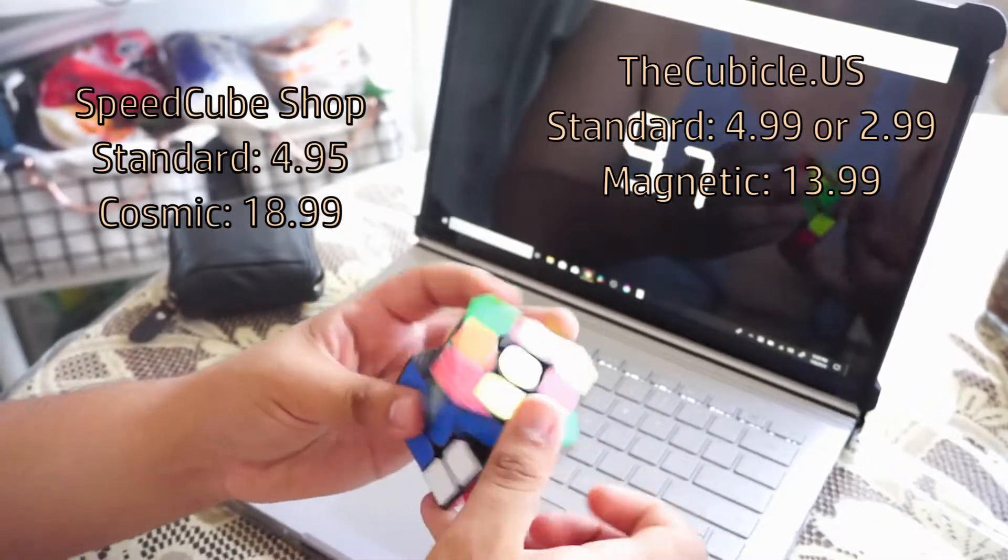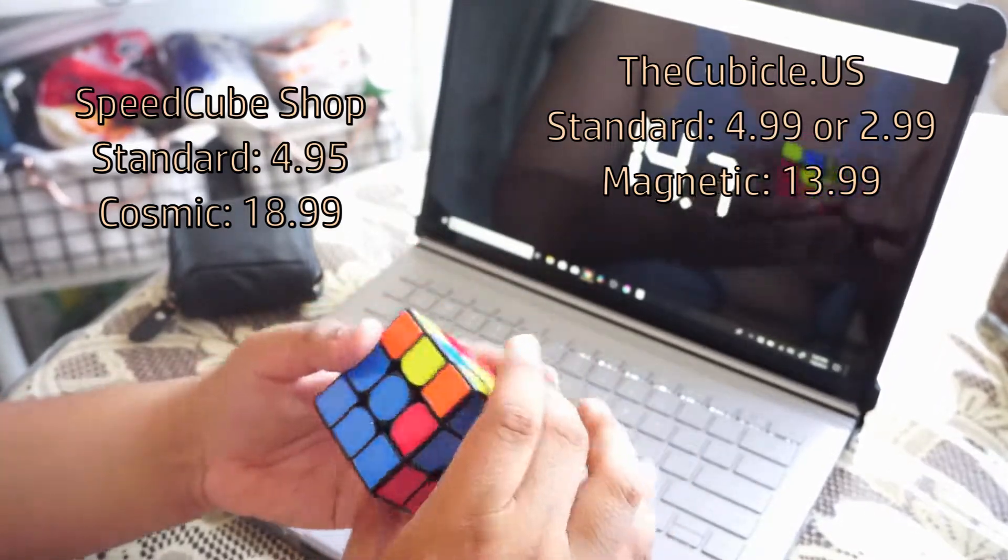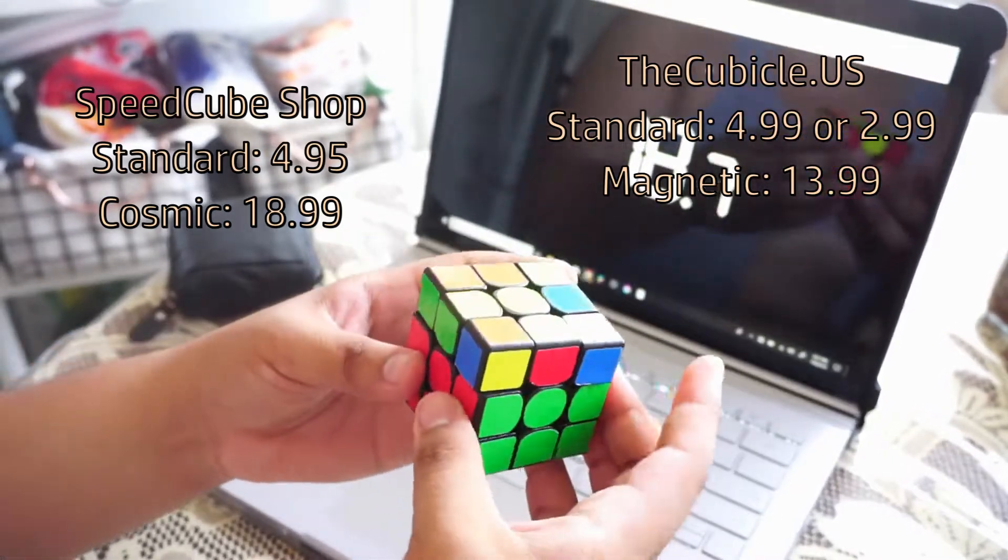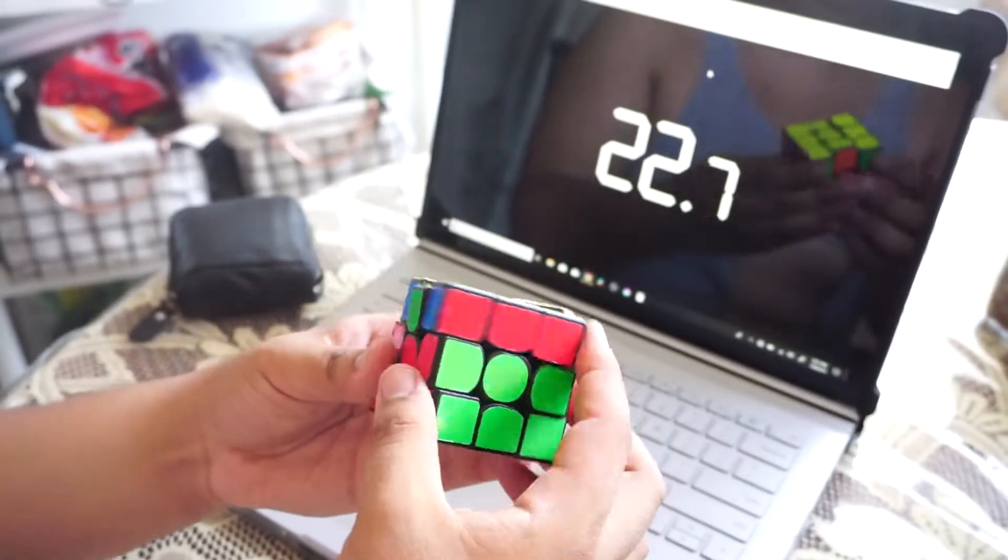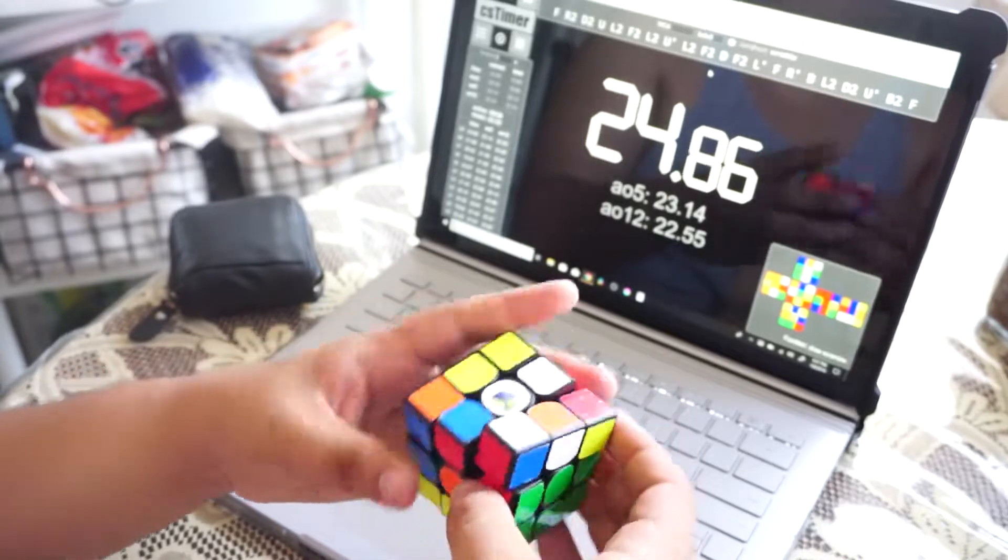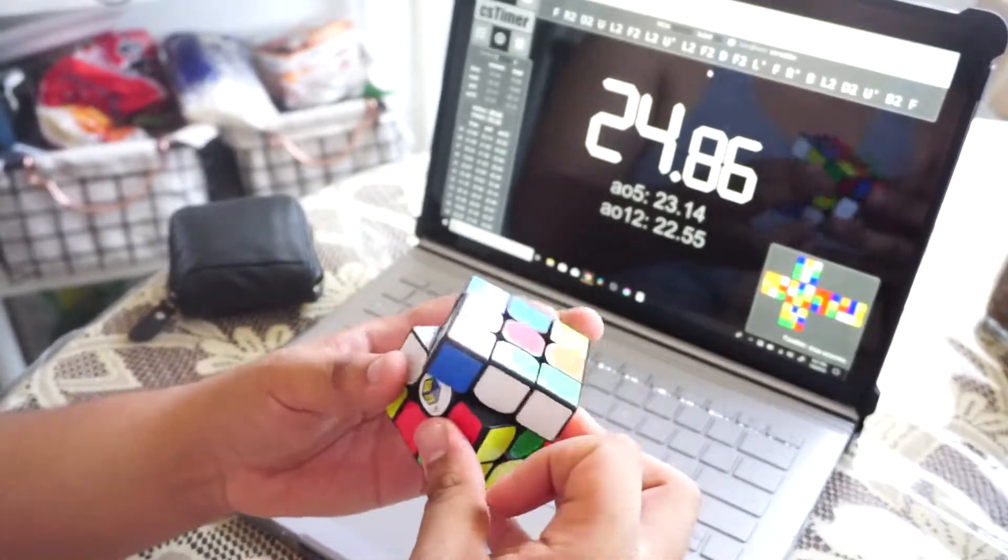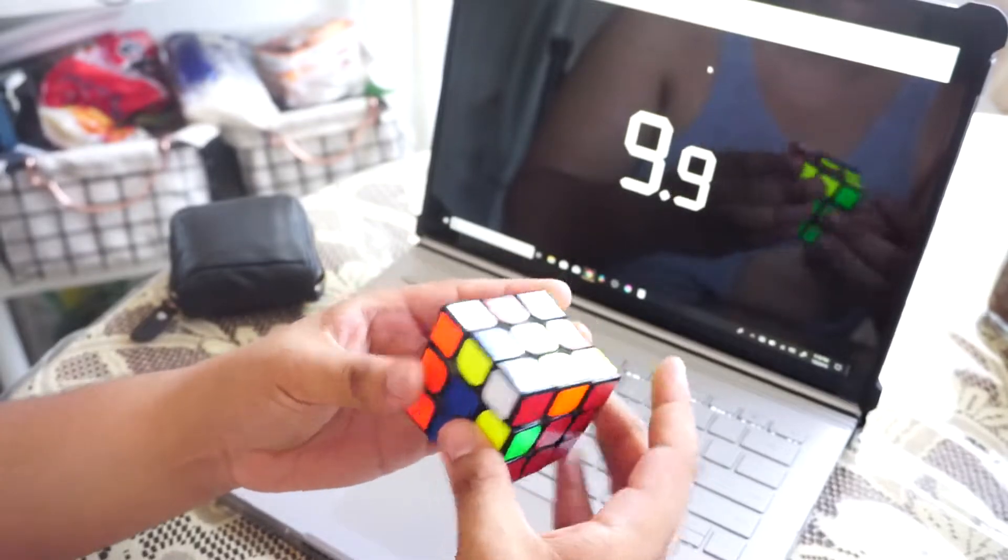The magnetic version of this puzzle is thirteen dollars and ninety-nine cents from The Cubicle and on SpeedCubeShop, they have a custom Cosmic version for eighteen dollars and ninety-nine cents. Since the Cosmic version of this is only three dollars more than the MGC, this makes it really affordable to unlock its full potential. The prices for both of these cubes gives it the title of top budget speedcubes, but since the base price is three times lower than the MGC, the Little Magic wins this with an insane affordability that's great for beginners and intermediate people with premium versions.